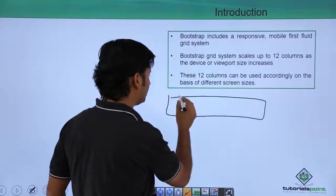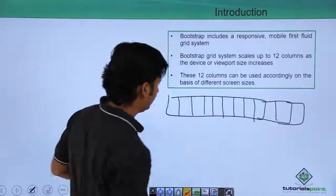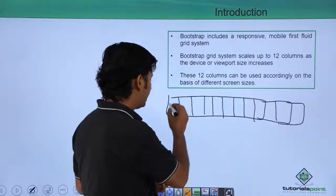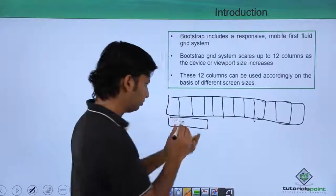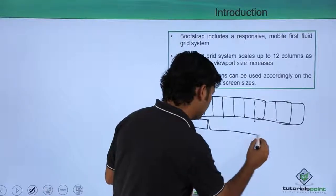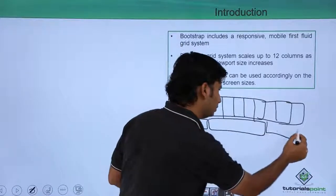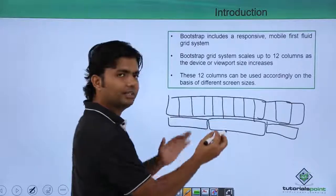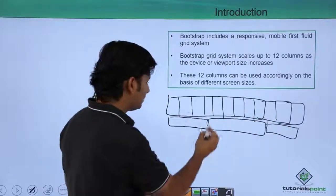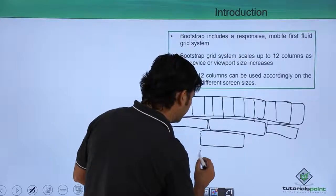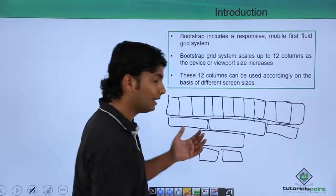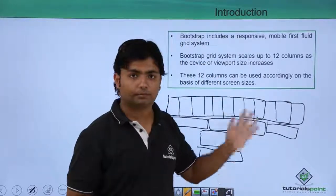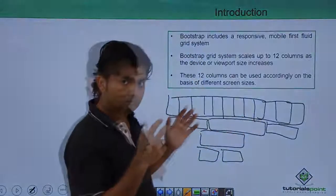The concept is that we have twelve columns. For a big screen, you can use three columns for one detail, maybe one for a header, and a few more columns for other content. For a small screen, you may want a single detail in the first row, so the same twelve columns can be split differently across lines.